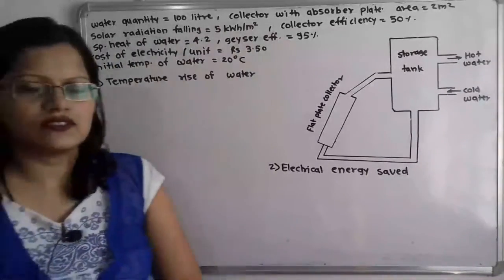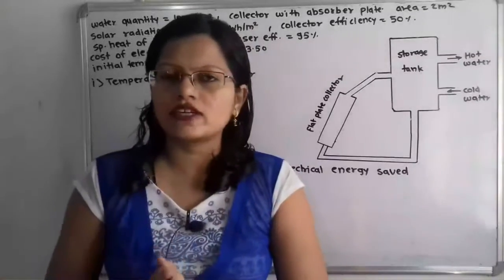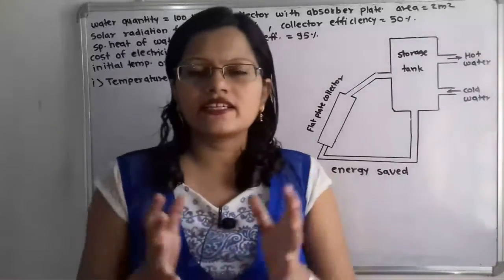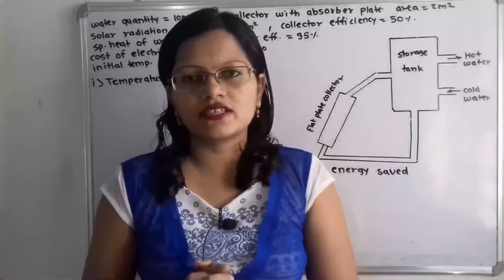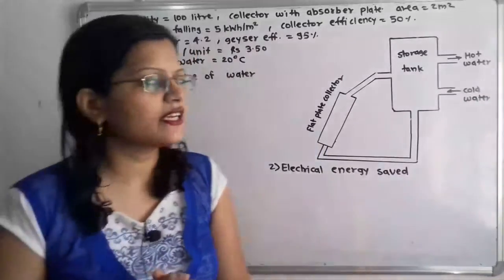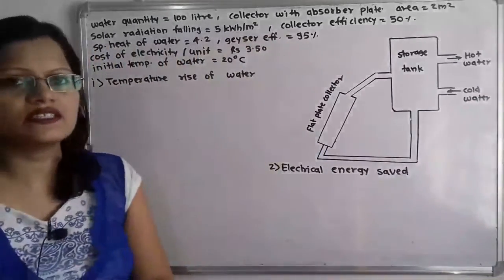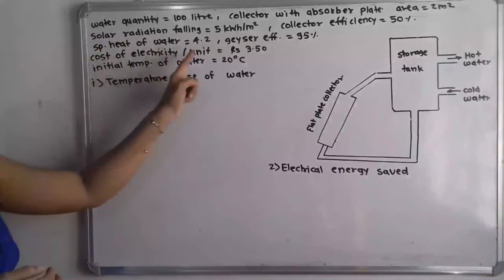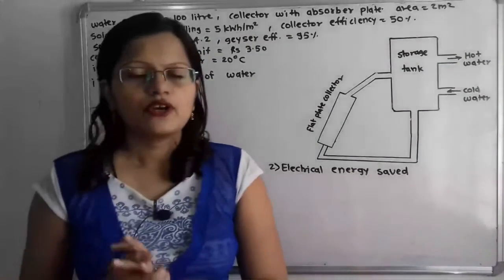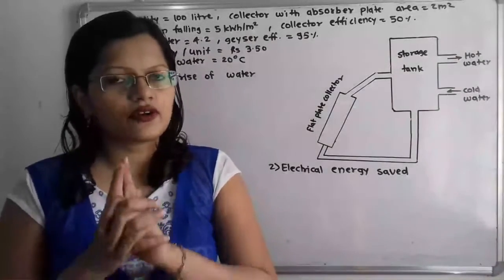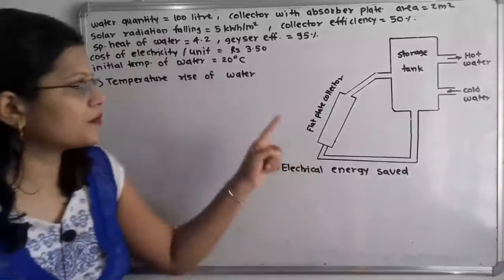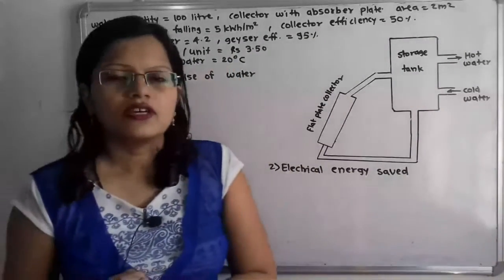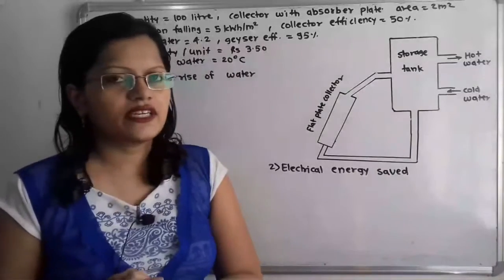Then geyser efficiency — instead of a solar water heater, if we use electricity we will use the geyser, and that geyser efficiency is given as 95%. The cost of electricity per unit is rupees 3.50. The initial temperature of water is 20 degree Celsius.